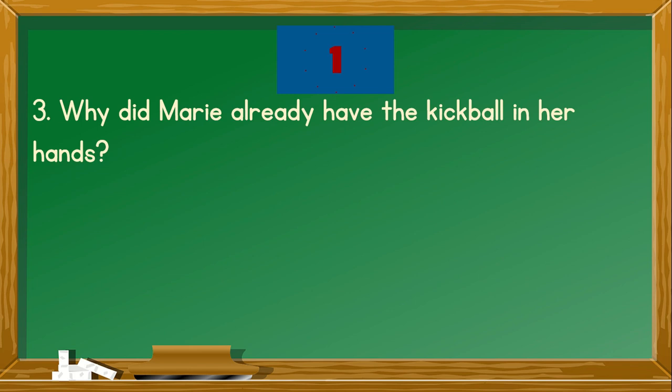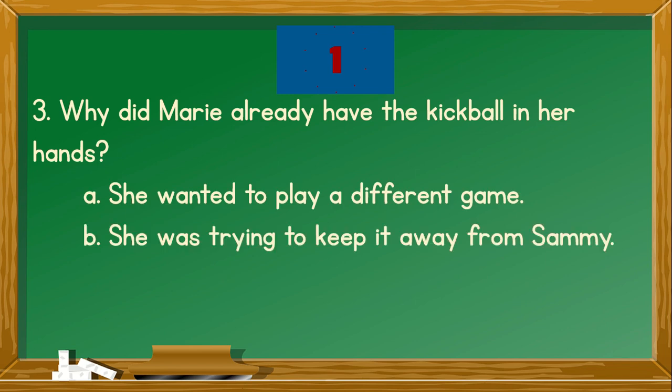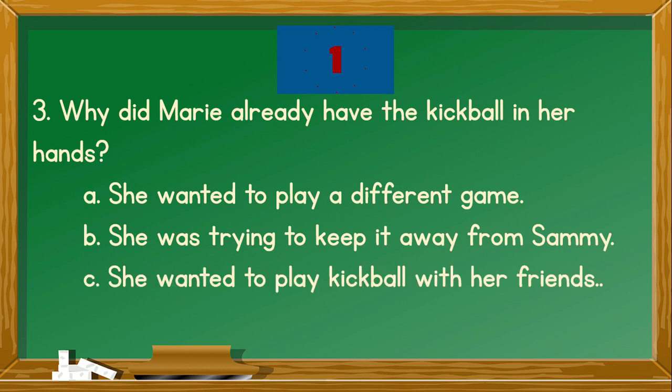Number 3. Why did Marie already have the kickball in her hands? A. She wanted to play a different game. B. She was trying to keep it away from Sami. C. She wanted to play kickball with her friends. You're right. The correct answer is C. She wanted to play kickball with her friends.